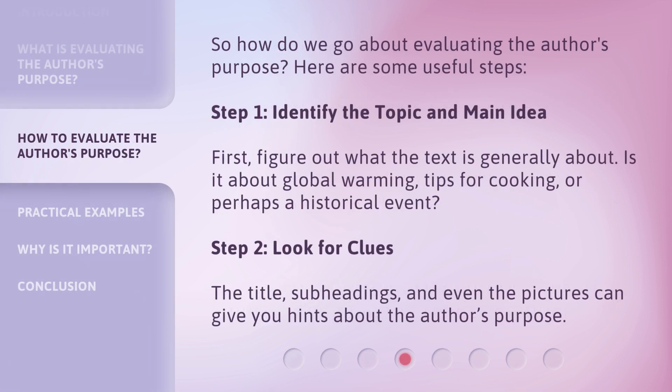So how do we go about evaluating the author's purpose? Here are some useful steps. Step 1: Identify the topic and main idea. First, figure out what the text is generally about — is it about global warming, tips for cooking, or perhaps a historical event? Step 2: Look for clues. The title, subheadings, and even the pictures can give you hints about the author's purpose.